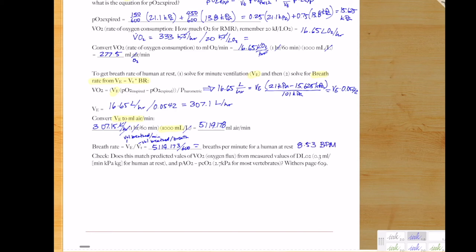From Fick's law, we know that VO2 is related to DLO2, which is the summary of all the morphological terms, times the PAAO2 minus PCO2. So if we plug in all those values, and don't forget to multiply by the mass of the 70 kilogram human, because this DLO2 is per kilogram, we get 56.7 milliliters per minute.